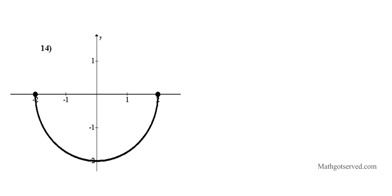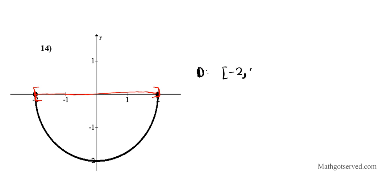Now let's take a look at another example. This looks like a portion of the previous one but compressed. Let's find the domain and range and determine if this relation is a function. For the domain, we look at the horizontal span — how wide the graph is. Going to the left it reaches negative 2, included, and ends at 2, also included. So the domain is from negative 2 all the way to 2.